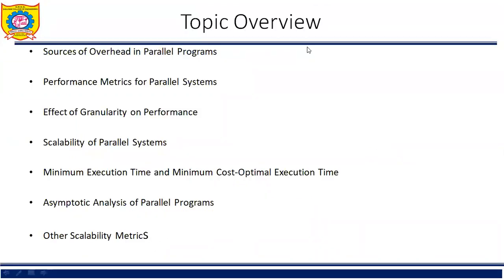This is the topic overview that we are going to discuss in unit number 4. A sequential program is usually evaluated in terms of its execution time, expressed as a function of size of its input. The execution time of a parallel algorithm depends not only on input size but also on the number of processing elements used and their relative computation and inter-process communication speeds. Hence, a parallel algorithm cannot be evaluated in isolation from parallel architecture without some loss in accuracy.